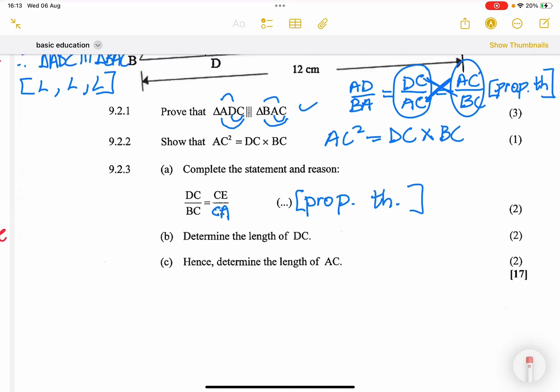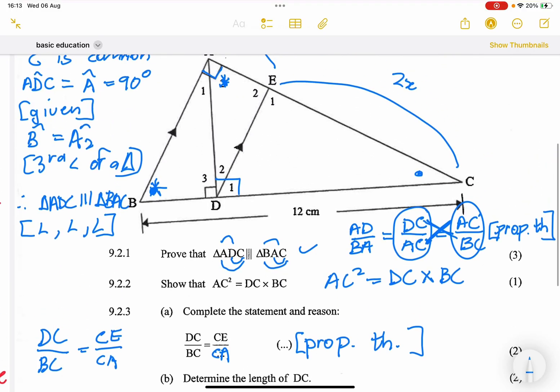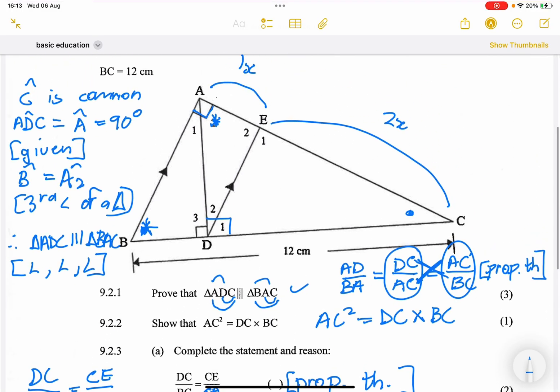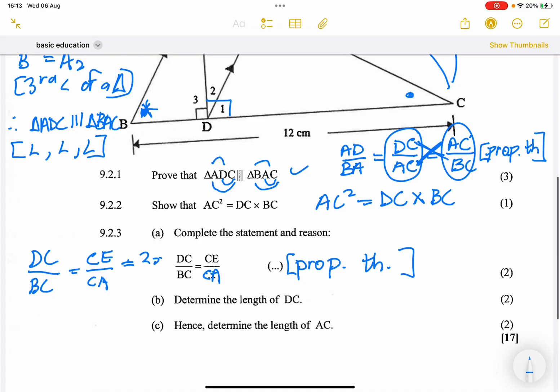They say determine the length of DC. I suppose that they want us to use exactly the ratio that we've just heard from the previous question, because it does have DC in it. So DC over BC is equal to CE over CA. Now, remember, we were given the ratio of CE. So CE is 2X. But CA would be 2X plus X, which means that's 3X.